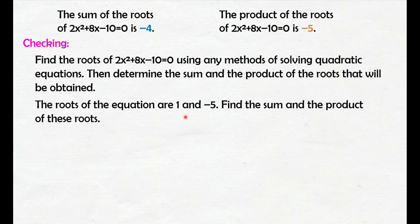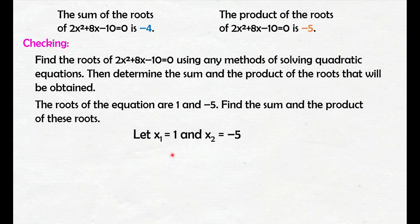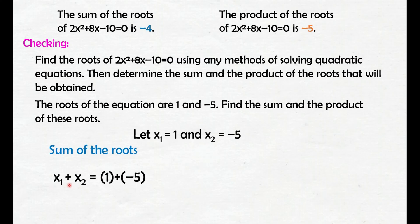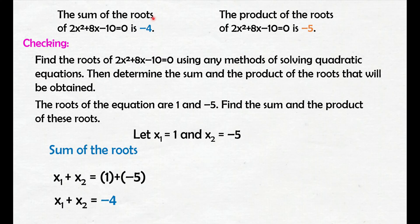The roots of the equation are 1 and negative 5. Let x sub 1 equals 1 and x sub 2 equals negative 5. For the sum of the roots, we just add the two roots: x sub 1 plus x sub 2 equals 1 plus negative 5. That gives negative 4. So the sum of the roots is negative 4, which matches what we got in our first solution.